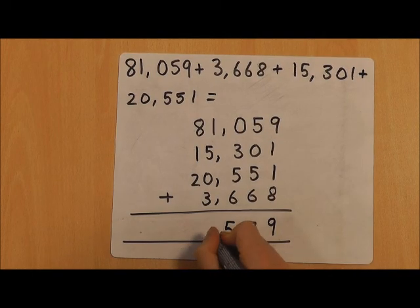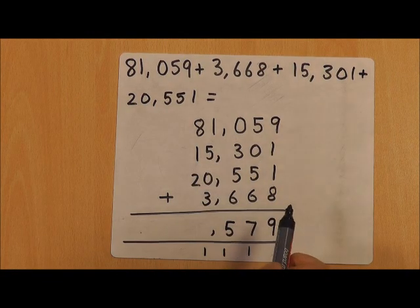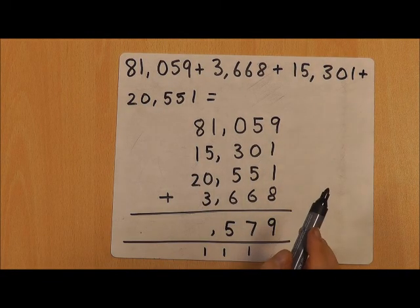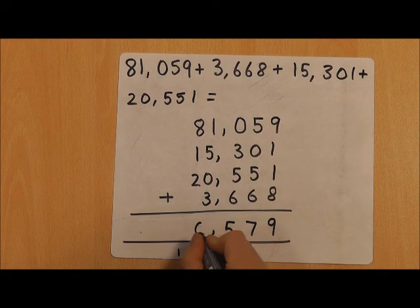So 1 add 5 is 6, add 0 is still 6, add 3 is 9, add 1 is 10. As with the others, I've carried the 1 there to make 10, and then the last column: 8 add 1 is 9, 9 add 2 is 11, add 1 is 12.